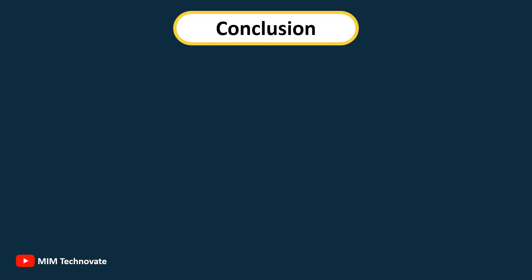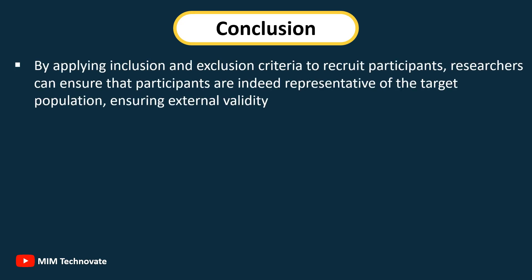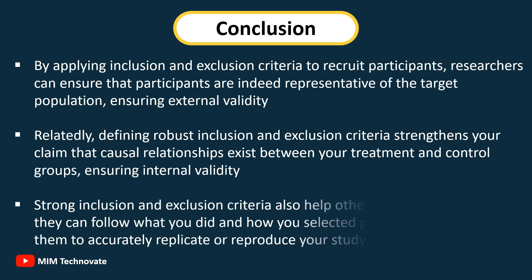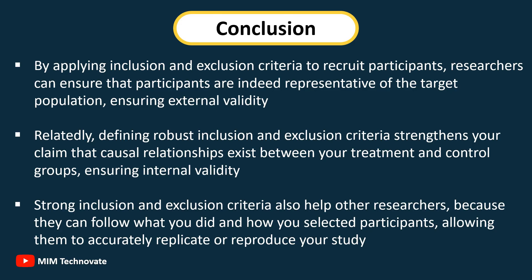By applying inclusion and exclusion criteria to recruit participants, researchers can ensure that participants are representative of the target population, ensuring external validity. Defining robust inclusion and exclusion criteria also strengthens the claim that causal relationships exist between treatment and control groups, ensuring internal validity. Strong criteria further help other researchers replicate or reproduce the study by following how participants were selected.